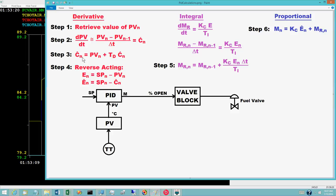Step 3 computes the projected value C hat sub n is equal to PV sub n plus T sub d C prime sub n, which is the rate of change of the PV.